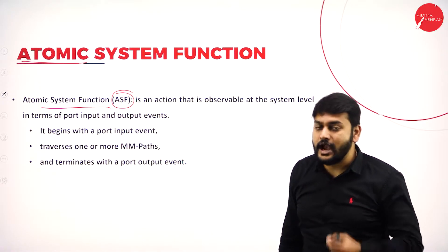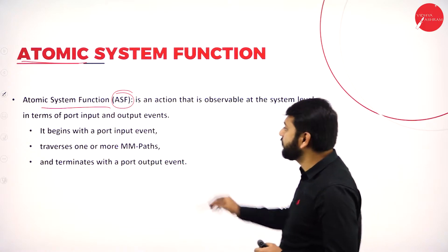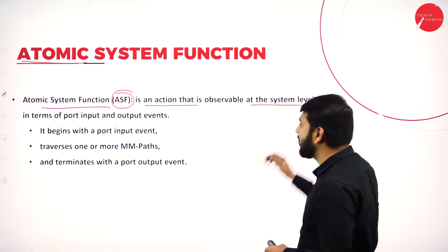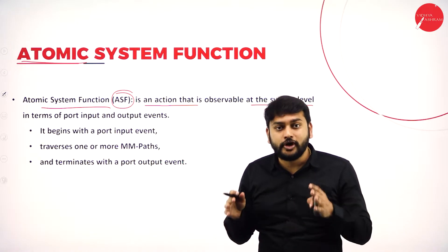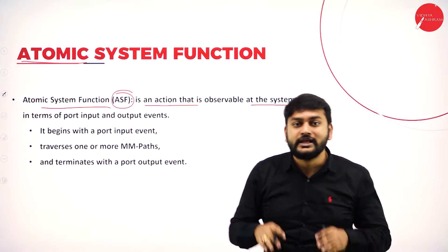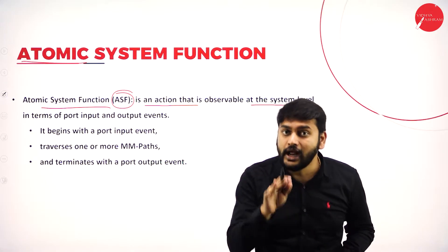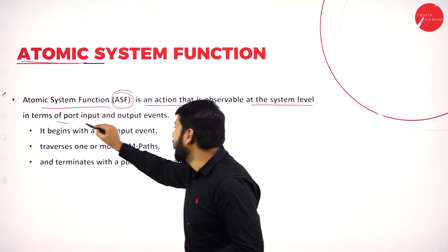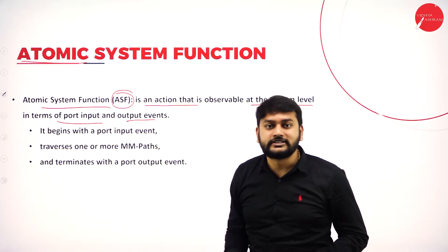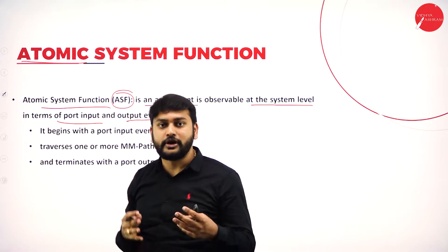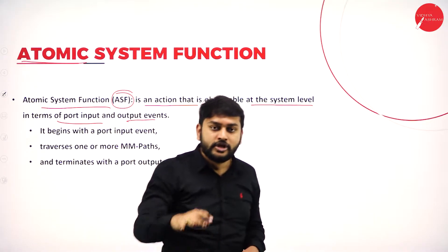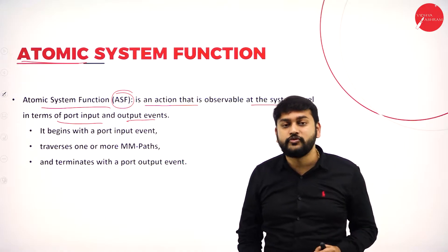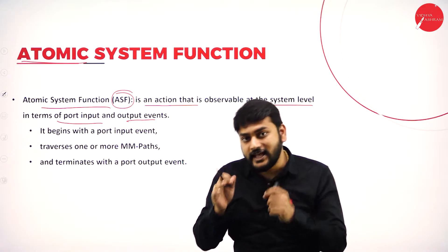What exactly is this atomic system function? It is an action that is observable at the system level. That is the first important point. It is an action that you can observe at the system level in terms of port input and output events. Whenever you are performing the input and output events at the system level, it is an action that you will be able to observe. This is what we call ASF.